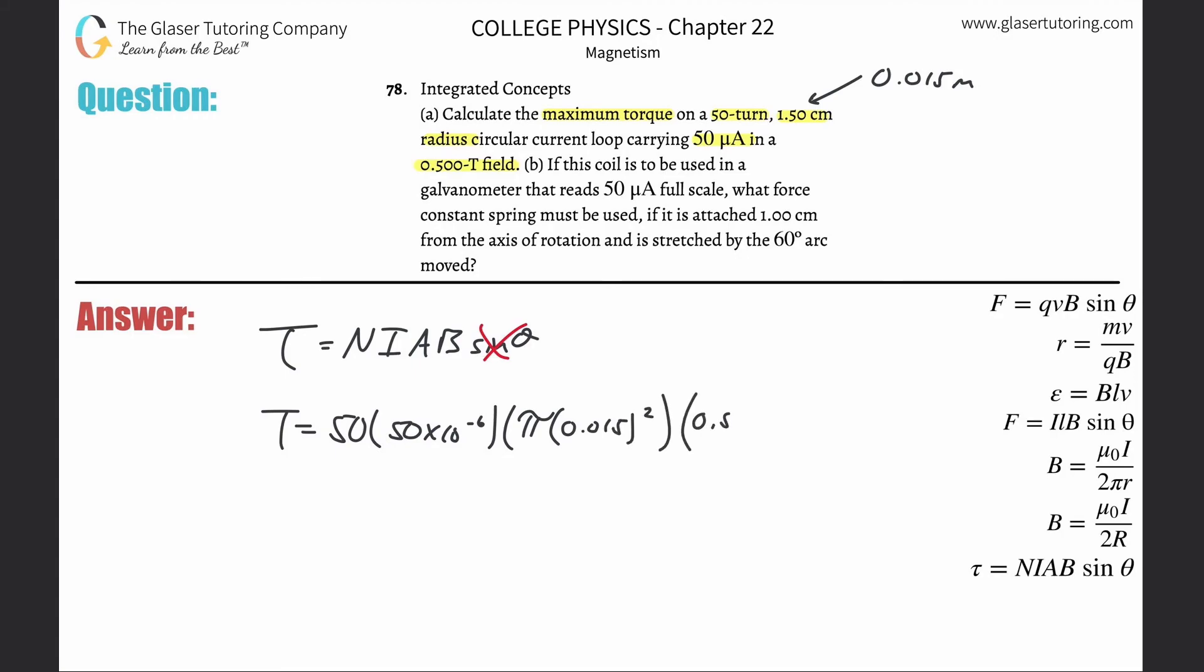Then the magnetic field of 0.5. So it's 50 × 50×10^-6 × π × 0.015² × 0.5. This works out to be 8.84×10^-7 newton-meters.